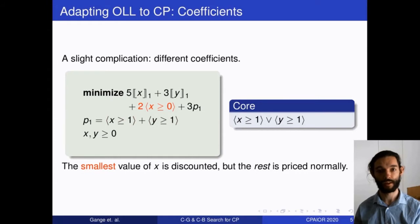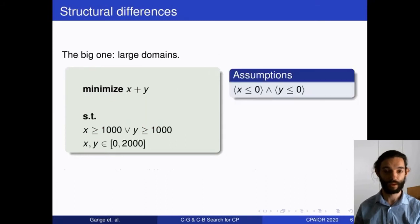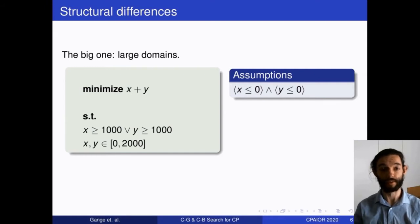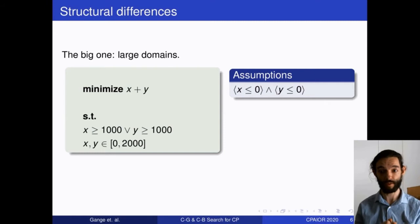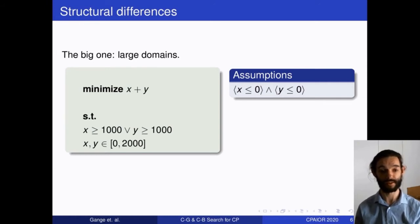There are issues that make the direct encoding less effective. The big difference between max-SAT and CP is that we have much larger domains in CP. If x and y are both in the range 0 to 2000 and there's a constraint that one of them must take a penalty of at least 1000, we assume both are at their minimum, get a core that they must take at least one penalty, then add the penalty term — but we'd have to do that a thousand times, introducing a thousand variables.